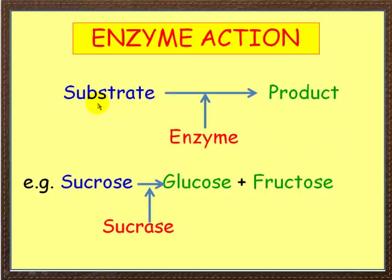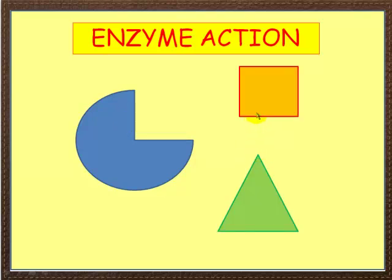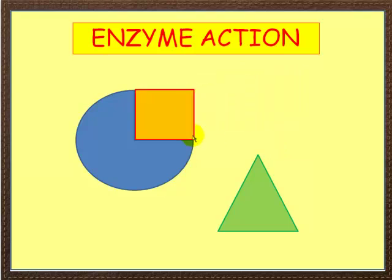In a reaction, a substrate - for example sucrose - is acted upon by an enzyme, for example sucrase, to produce the products: glucose plus fructose. So: substrate, enzyme, products. Now, all enzymes have an active site or binding site, and it's this to which the substrate binds. Only the correctly shaped substrate will fit into that active site - that's why enzymes are very specific.